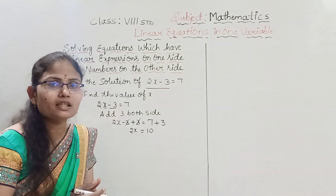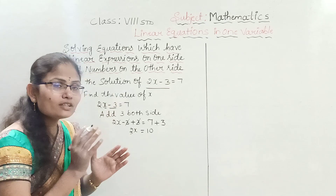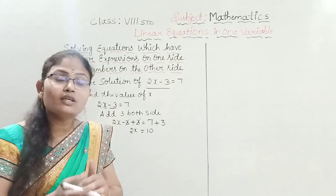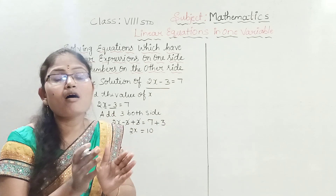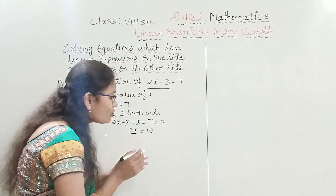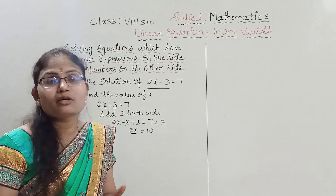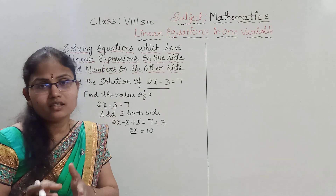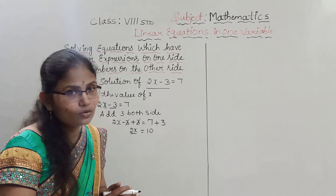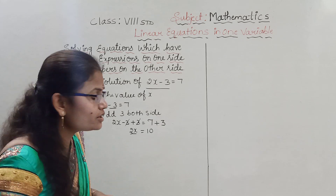There is still one more term with x — that is 2. We have to eliminate 2. The relationship in 2x is that x is multiplied by 2, so to eliminate 2 we take the reverse operation of multiplication, which is division. We divide both sides by 2: 2x divided by 2 equals 10 divided by 2.